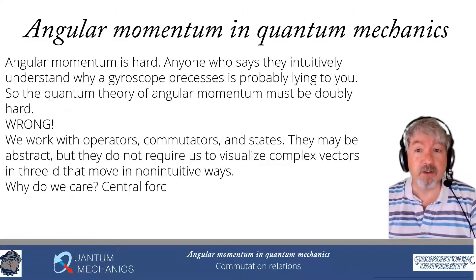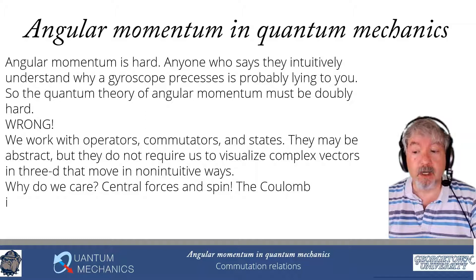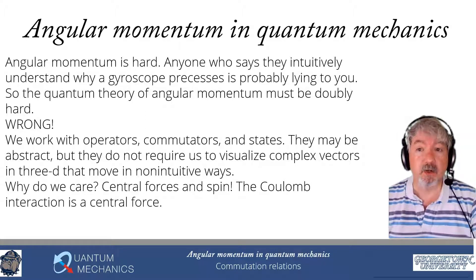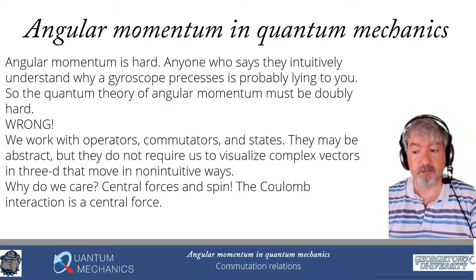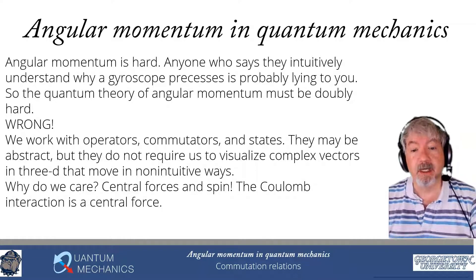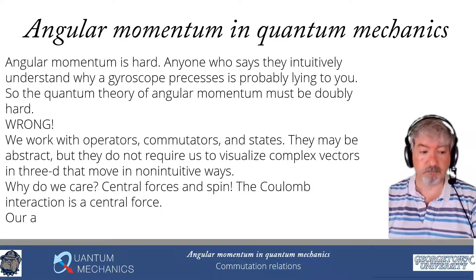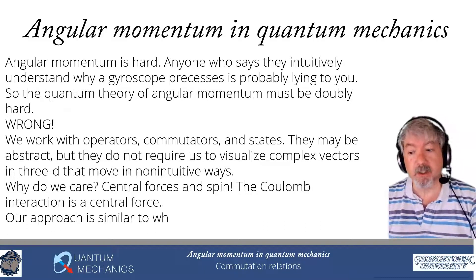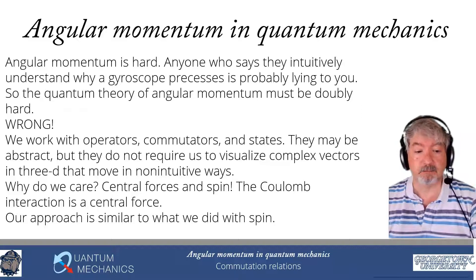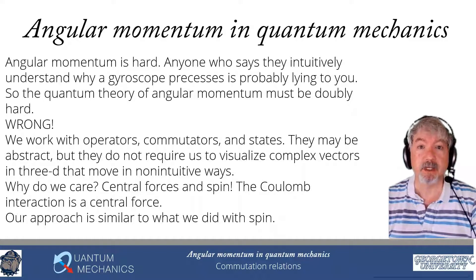Why do we have to do this? Why do we care? Because the important forces — the Coulomb interaction in atoms — they're central forces. We also care because we need to deal with spin, and spin is an angular momentum. The approach we're going to take for orbital angular momentum will be very similar to what we did with spin.